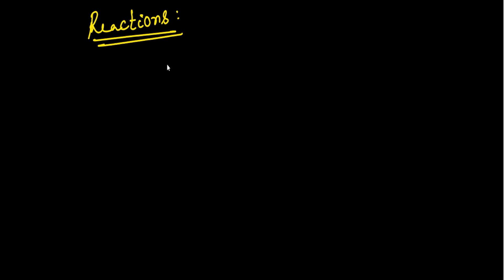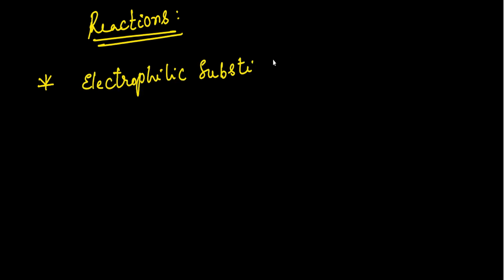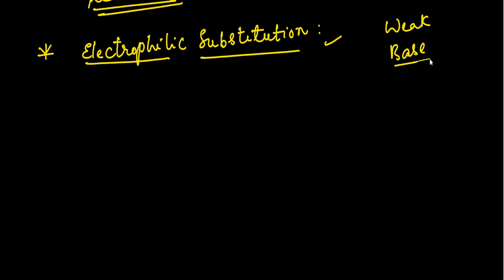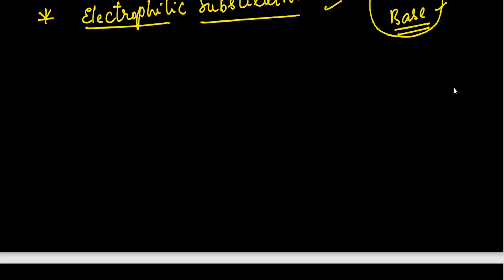The first reaction we discuss is the electrophilic substitution reaction of isoxazole. Isoxazole is a weak base, which is why it undergoes electrophilic substitution more readily than pyridine but less readily than furan. Because of this low basicity, it reacts more readily in electrophilic substitution than pyridine but less so than furan.